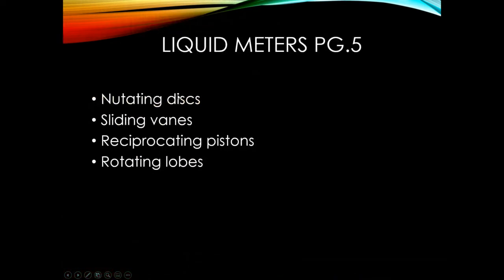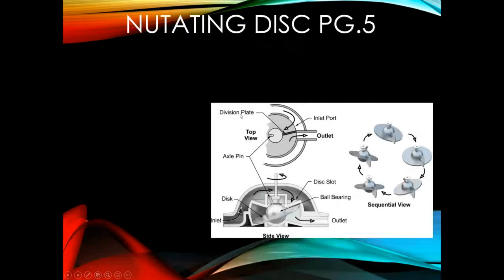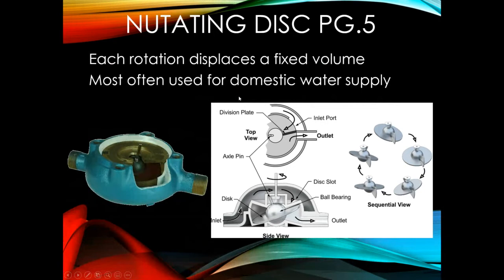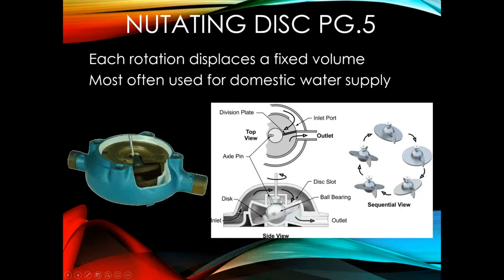Looking at the liquid meter group: mutating discs, sliding vanes, reciprocating pistons, and rotating lobes. Starting with the mutating disc — the graphic probably does more than any words here. Each rotation displaces a fixed volume, standard for all positive displacement meters. This type of meter is often used for domestic water supply. The disc kind of wobbles in its housing, opens up on one side, traps that volume, and as it rotates squirts it to the output of the meter.